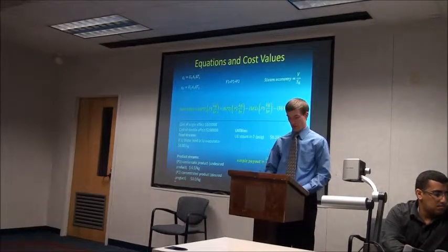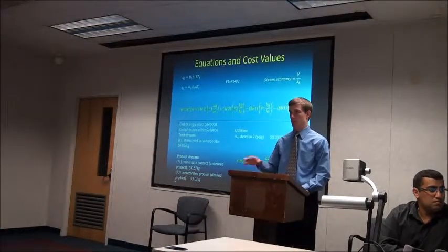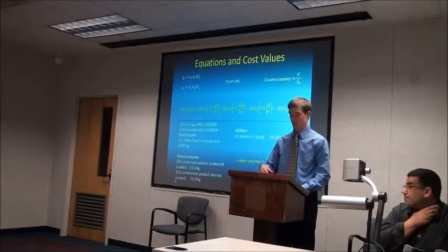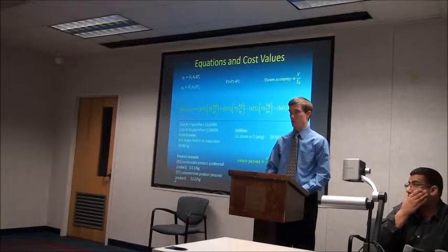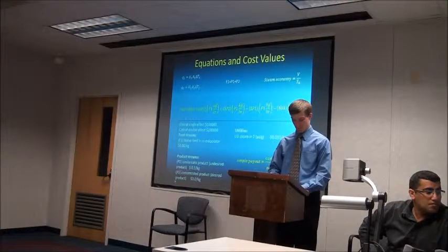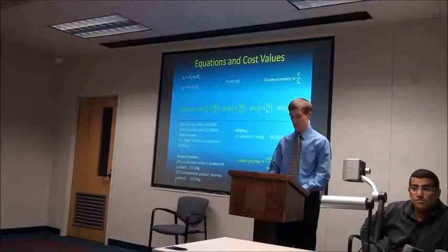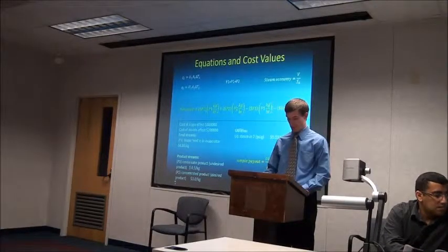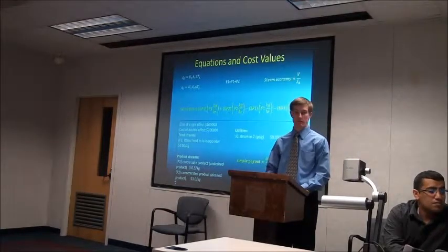The following equations were used to figure out our costs. The main one was the net profit. P1 was the condensate product, collected at two different spots in the double effect evaporator and added together. P2 was the concentrated product — the desired liquid coming out of the process. The feed cost was $0.80 per kilogram, the undesired product was $0.50 per kilogram, the concentrated product was $3.00 per kilogram, and the steam used to heat the first effect was $0.031 per kilogram. We calculated simple payout by dividing the cost of the facility by the net profit.